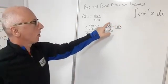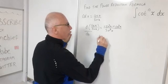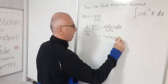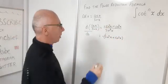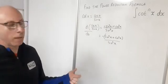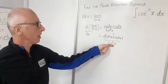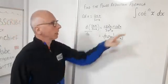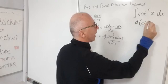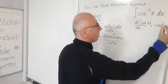Now using the trig identity sine squared of x plus cosine squared of x equals 1, we can rewrite the numerator as negative times the quantity sine squared of x plus cosine squared of x, all over sine squared of x. Applying the trig identity puts a negative 1 in the numerator, giving us negative cosecant squared of x. So the derivative of cotangent of x equals negative cosecant squared of x.